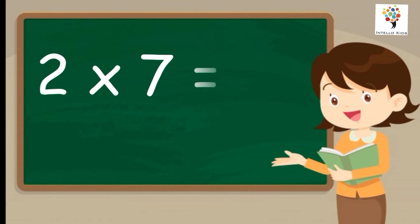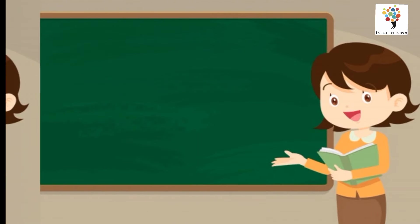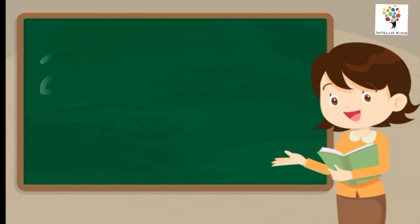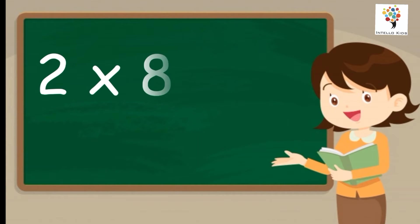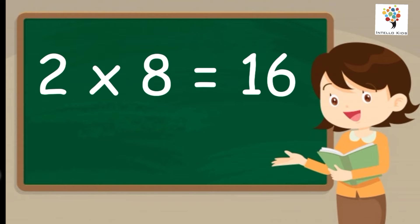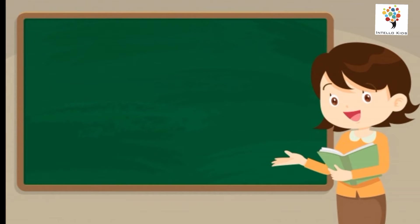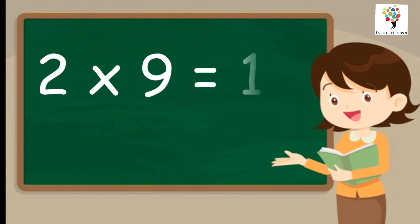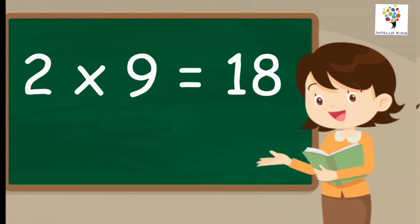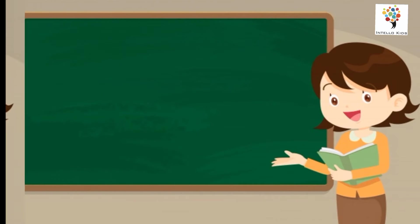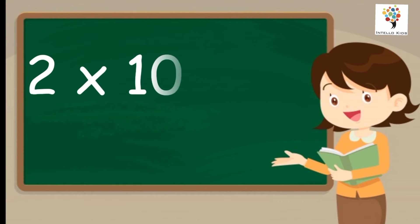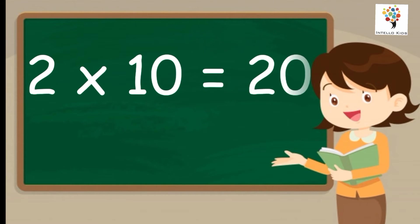Two sevens are fourteen. Two eights are sixteen. Two nines are eighteen. Two tens are twenty.